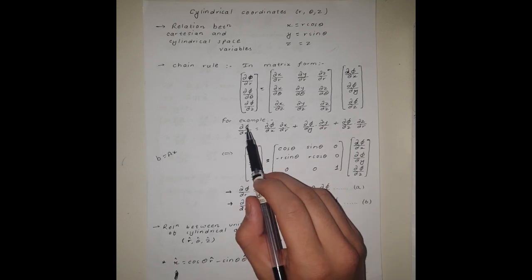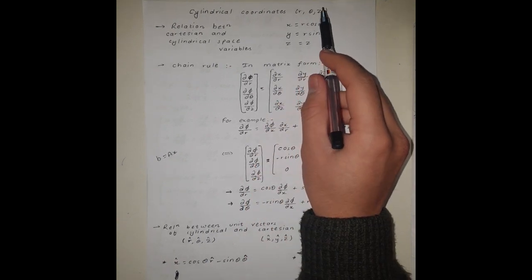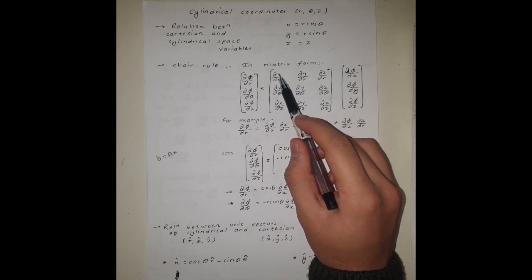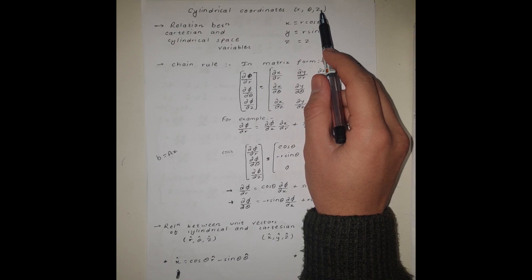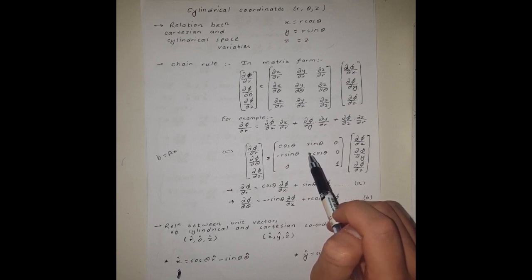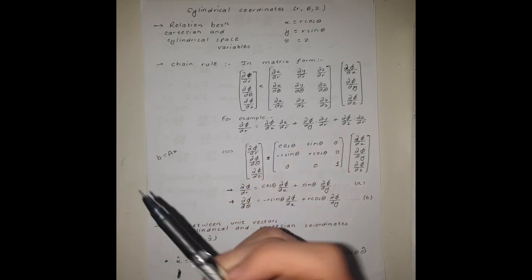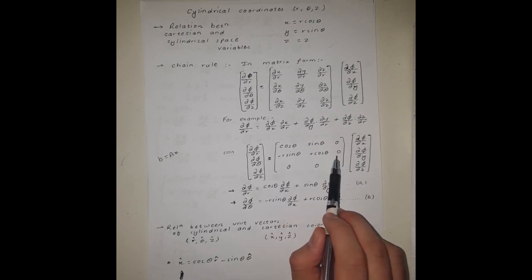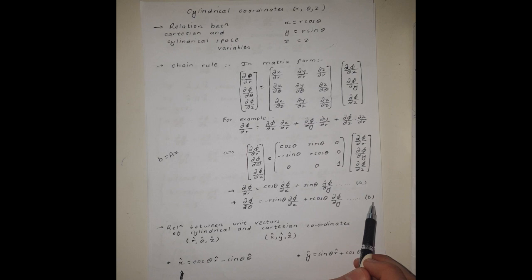After finding the partial derivatives of phi with respect to theta and z, I have constructed the matrix form of the chain rule. In this matrix I have the partial derivatives of x, y, and z with respect to r, theta, and z. Using those equalities I found the respective partial derivatives, and by substituting these values I obtained the matrix equation b equals Ax. By multiplying the first and second rows of this matrix with the vector I obtained two equations which I will use later.